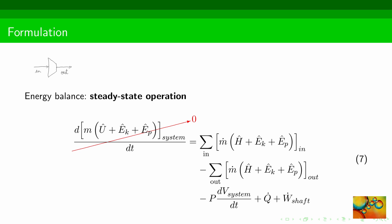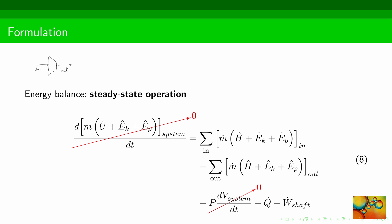We first apply the condition of steady-state operation. The term on the left-hand side, which is a time derivative, vanishes because the energy inside the compressor will not change. We use the condition of steady-state operation again, this time to look at the right-hand side of the equation — there is a time derivative of the system volume, and because the properties are constant in time, this derivative is equal to zero and this term will vanish. Next, we use the fact that the compressor is adiabatic, and the heat transfer rate is therefore equal to zero.